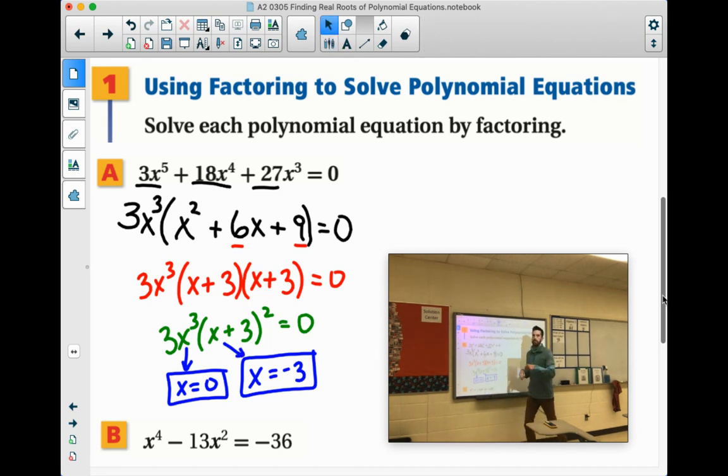Now this multiplicity that we'll eventually talk about, we'll say like, how many times could it equal 0? So x to the 3rd means x times x times x. So that means you could have x equals 0 three times out there. So it would have a multiplicity of 3. This x plus 3, see how it's x plus 3 squared? That means there would be two of those. So x equals negative 3 will have a multiplicity of 2. But we'll get there. Don't worry.